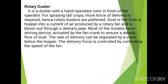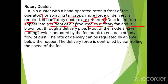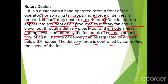The rotary type duster has a hand-operated rotor. For spraying tall crops, more force of delivery is required, so rotary dusters are preferred. Dust is fed from a hopper into a current of air produced by a rotary fan and blown out through the delivery pipe. Most models have a steering device actuated by the fan crank to ensure a steady flow of dust. The rate of delivery can be regulated by a valve below the hopper, and the delivery force is controlled by controlling the speed of the fan.